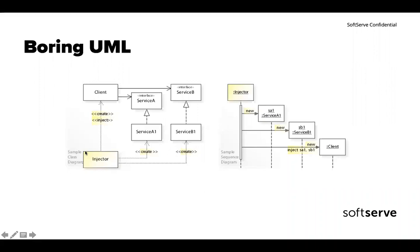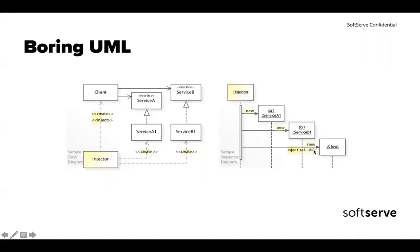Looking at a UML diagram, we have the injector - the one who is injecting - and the client that needs some parts. The injector creates dependencies and injects services into the client, after which the client can use them. In a sequence diagram, the injector creates a service, then injects both, and then the client starts working. When a client can itself be a dependency for something else, it becomes a service, which is when we have a dependency graph.